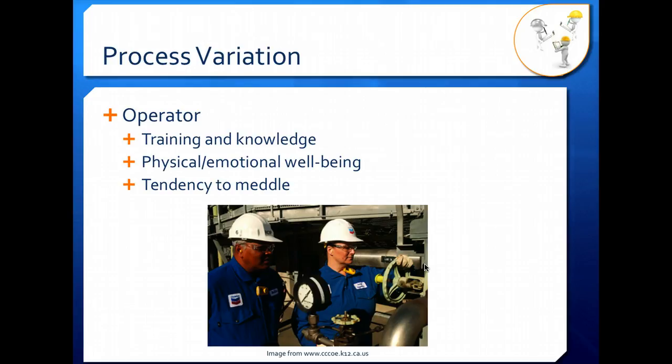Finally, your operator can be a very large source of variation, particularly if they do not have good training and knowledge. The more training and knowledge of your process the operator has, the better they're able to reduce their own variation because they know what they're doing when working on process control. Physical and emotional well-being can also affect operator variation. Think about it: if you go to school when you're sick or stressed out, you're probably going to have more variation in your behavior and how you react to things than if you're feeling great and not stressed at all.